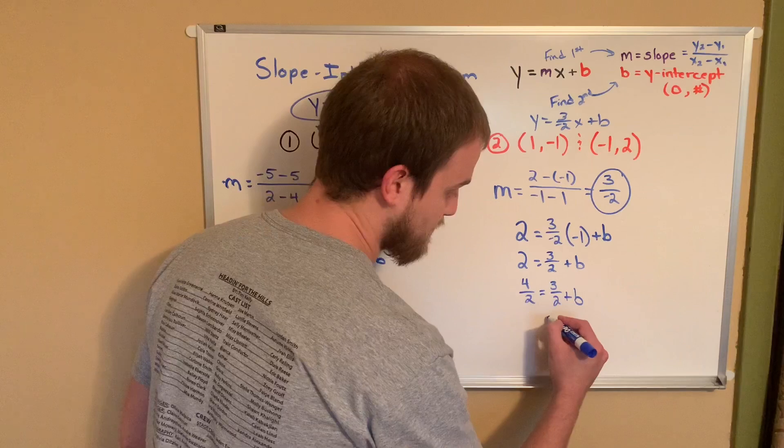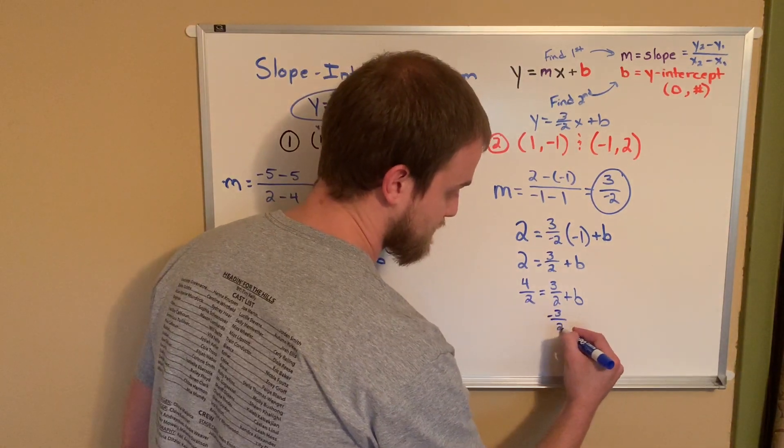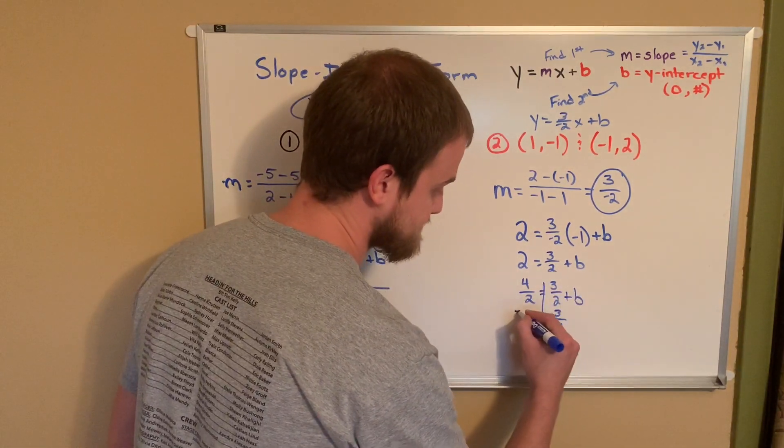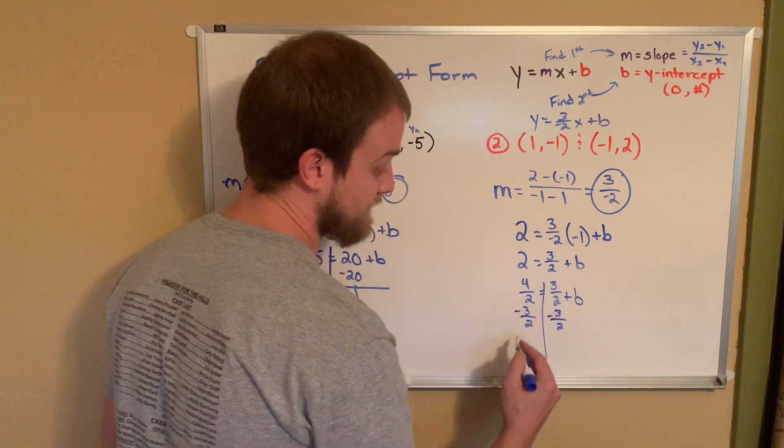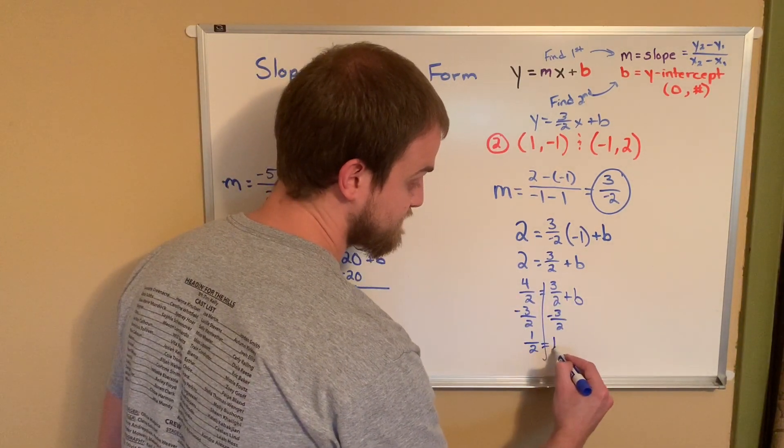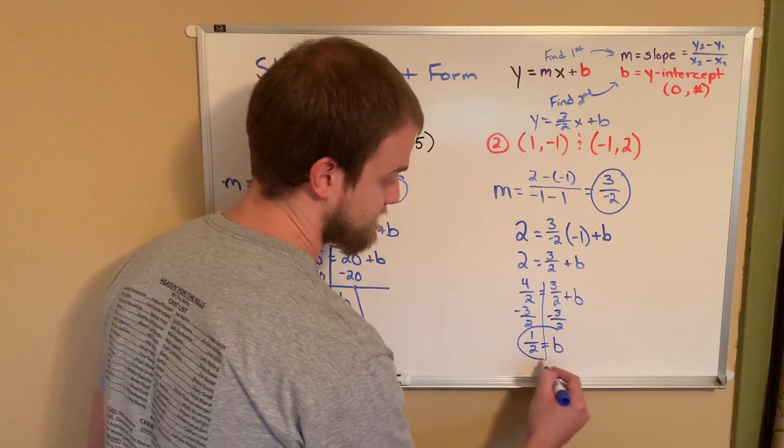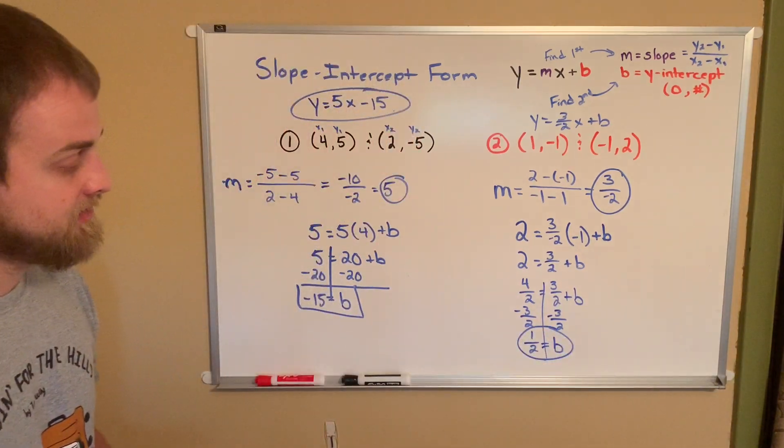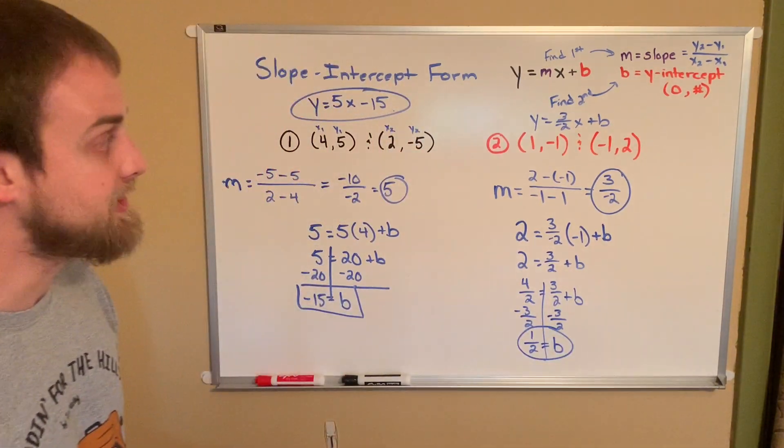And all I did from here to here is just converted this 2 into a fraction so that we have a common denominator. Well, we're one step away. We're going to subtract 3 halves from both sides. And I'm going to be left with 1 half equals b. So my y-intercept is actually 1 half.